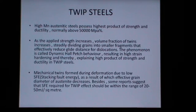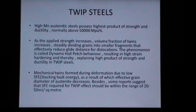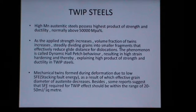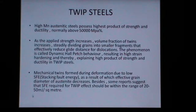Mechanical twins formed during deformation are due to low stacking fault energy, or SFE, as a result of which the effective grain diameter of austenite decreases. Some reports suggest that the stacking fault energy required for the TWIP effect should be within the range of 20 to 50 mJ per square meter.